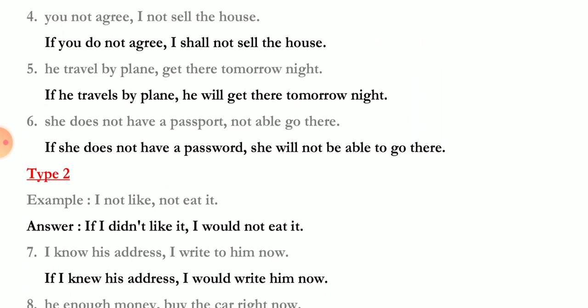'He travel by plane / get there tomorrow night' — 'If he travels by plane, he will get there tomorrow night.' 'Travels' is present indefinite and 'will get' is future tense. 'She does not have a passport' — 'If she doesn't have a passport, she will not be able to go there.' Now you've understood that if the if-clause is in present tense, the main clause will be in future indefinite.